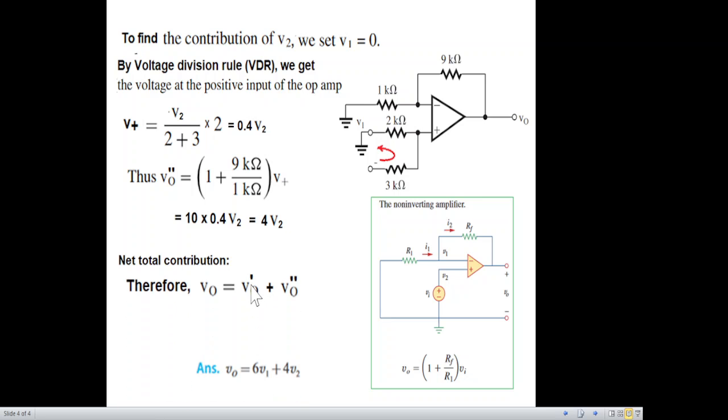v_o single dash plus v_o double dash, and we have 6 v1 for this and 4 v2 for the second one. So this is our answer, and that is what is given in the book. I hope you have been able to follow this. Please let me know through your comments. Thank you.